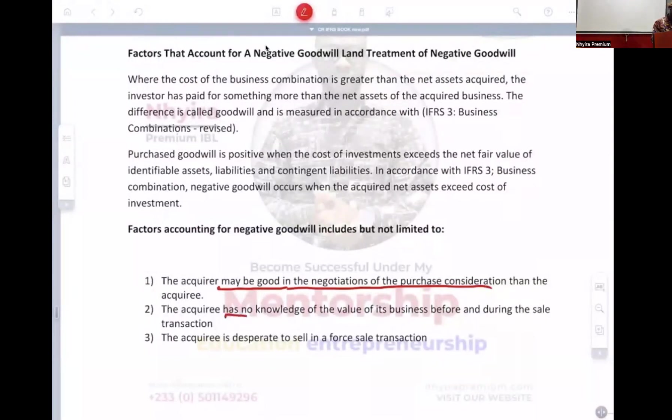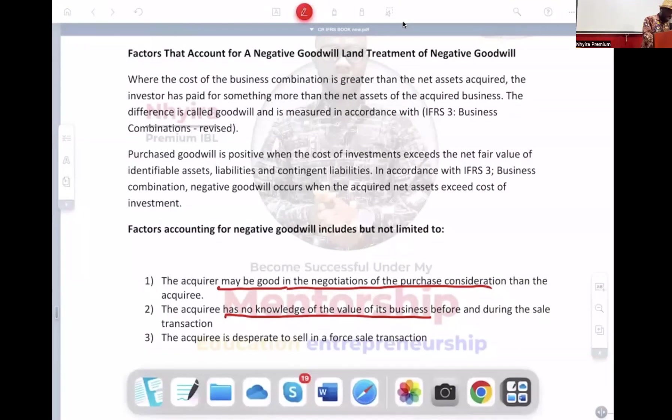Two, the acquirer has no knowledge of the value of the business before and during the sale transaction. And that is one of the dumbest things that we can face. But, you know, ignorance of the law is not an excuse. If we see that somebody is foolish and they don't know the value of what they have, we will crush them and take it away. And it may look like it's unfair. But if you want fairness, then maybe this is not the world you have to be in. Die and go somewhere else, maybe there will be fairness there.